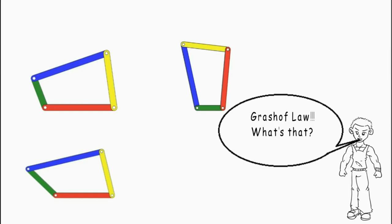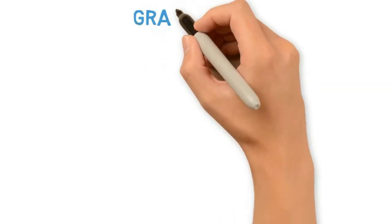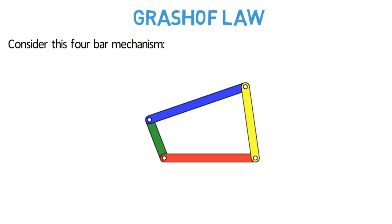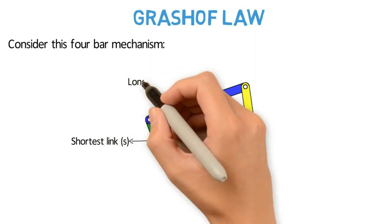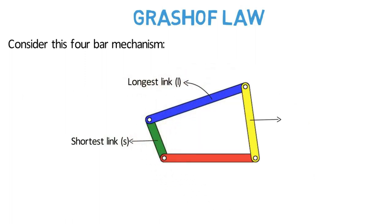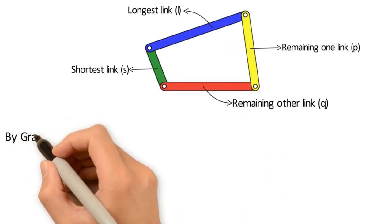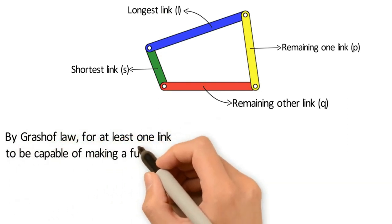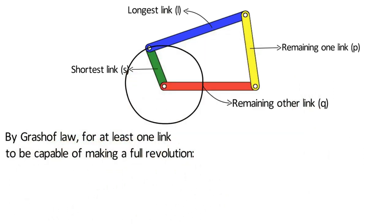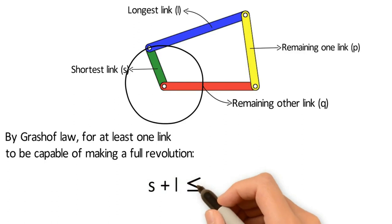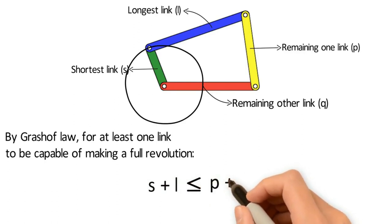Grashof's Law — let's discuss it. Consider this four-bar mechanism. Let S be the length of the shortest link, L be the length of the longest link, P be the length of one remaining link, and Q be the length of the other remaining link. By Grashof's Law, for at least one link to be capable of making a full revolution, the sum of the length of the smallest link S and the largest link L must be less than or equal to the sum of the lengths of the other two links, that is P and Q.